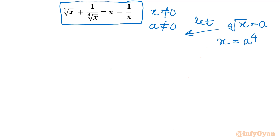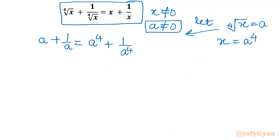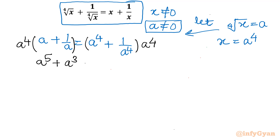So let's reframe our equation. I will write a plus 1 over a equal to x, so a to the power 4 plus 1 over a to the power 4. Now since a is not equal to 0, I can multiply or divide as needed. So I am multiplying both sides with a to the power 4, which gives us a to the power 5 plus a equal to a to the power 8 plus 1.